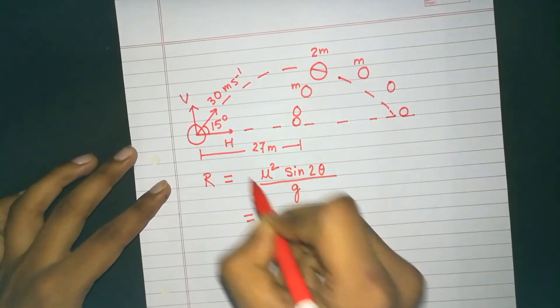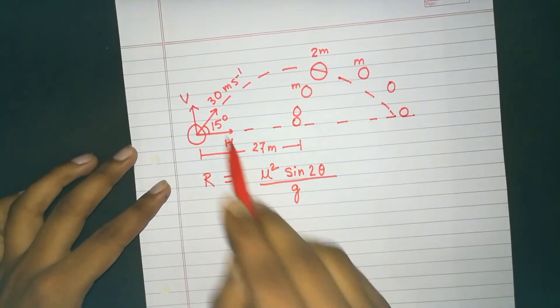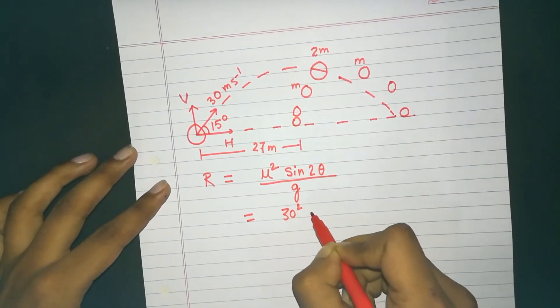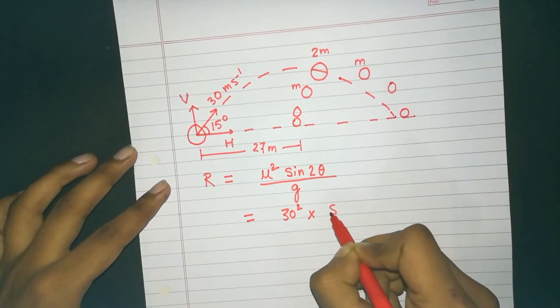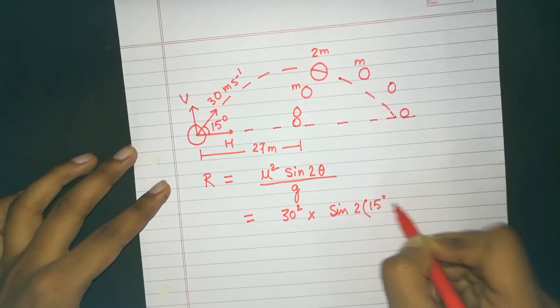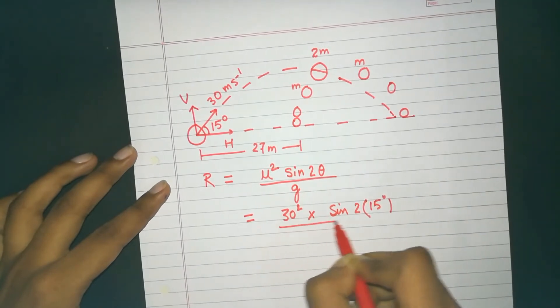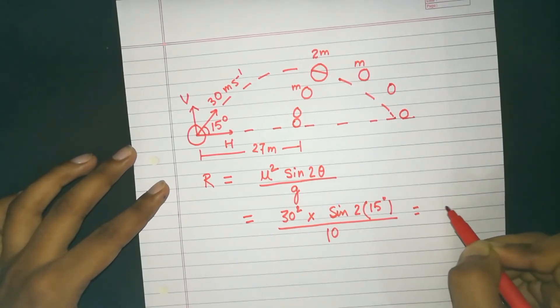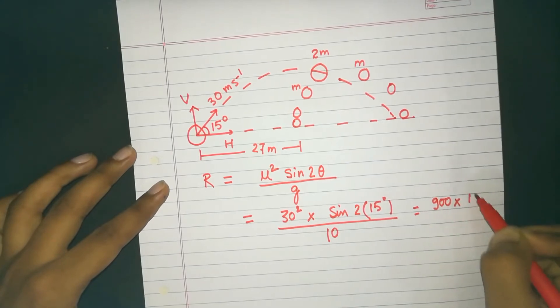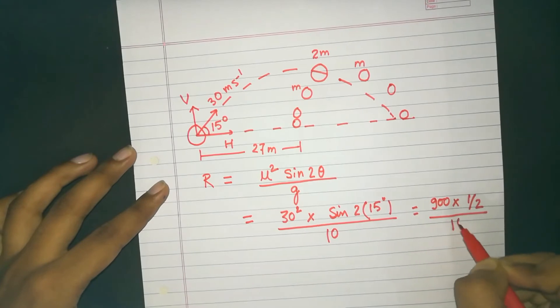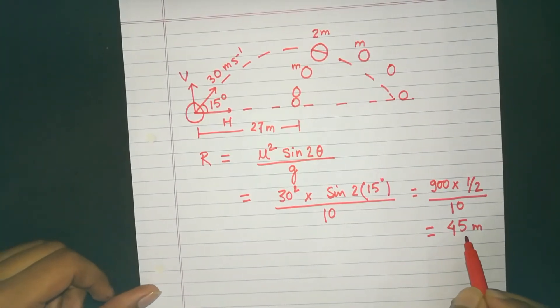Now putting the values, we have u as 30 meters per second, sin of twice of 15 degrees, which is the launch angle for this projectile, divided by 10. That is our acceleration due to gravity, and that will give us 900 multiplied by half, that is the value of sin 30, by 10. So it gives 45 meters.